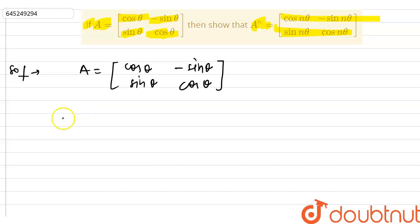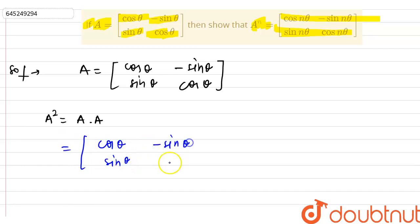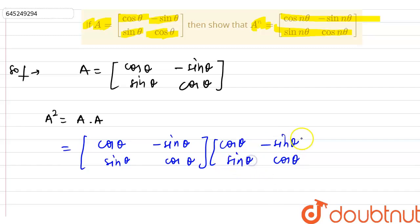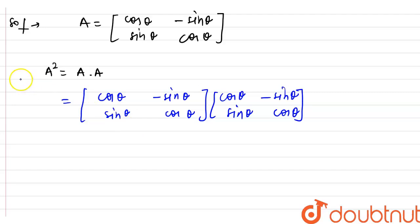Now I'm going to find A squared. A squared can be written as A into A. So I'm writing this matrix two times in multiplication: cos θ, -sin θ, sin θ, cos θ multiplied by cos θ, -sin θ, sin θ, cos θ. The multiplication of two matrices is done with first row times first column, first row times second column, second row times first column, then second row times second column.